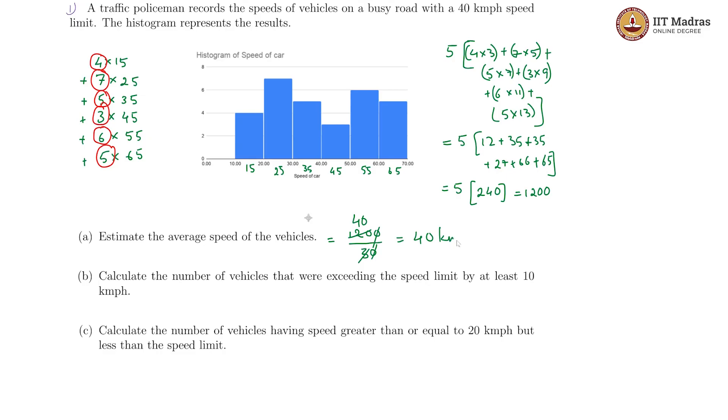We have 40 kilometer per hour is the average, which incidentally is also the speed limit given for these vehicles. The average is at the speed limit. The number of them which have crossed the speed limit and that is what the next question is, calculate the number of vehicles that were exceeding the speed limit by at least 10 kilometer per hour.